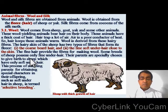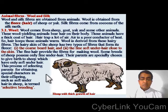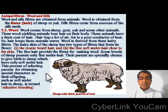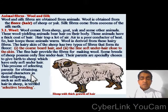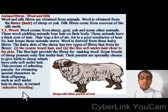Some breeds of sheep possess only fine under-hair, and their parents have been specially chosen to give birth to sheep which have only soft under-hair. This process of selecting parents for obtaining special characters in their offspring — such as soft under-hair in sheep — is termed selective breeding.